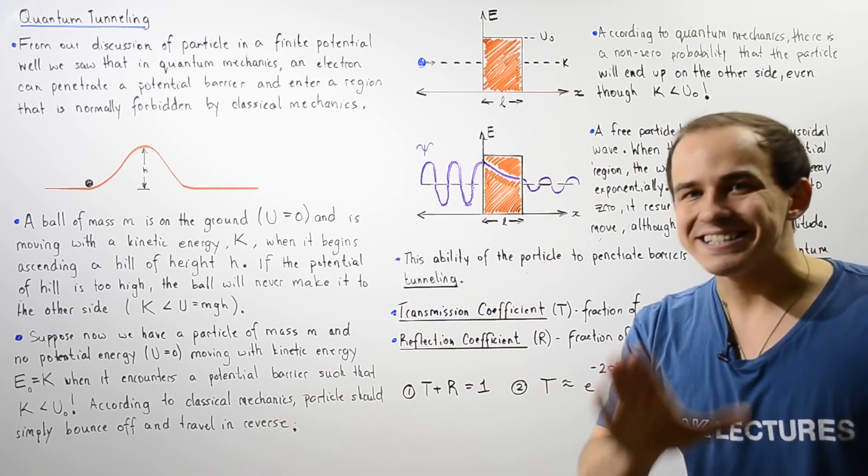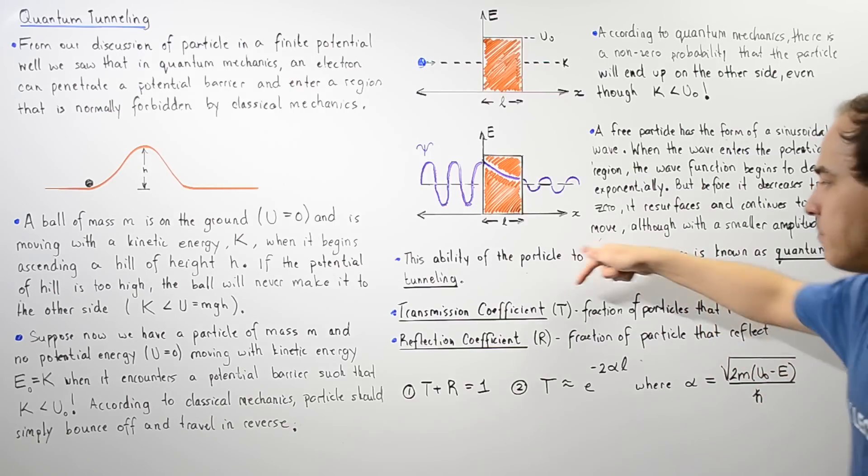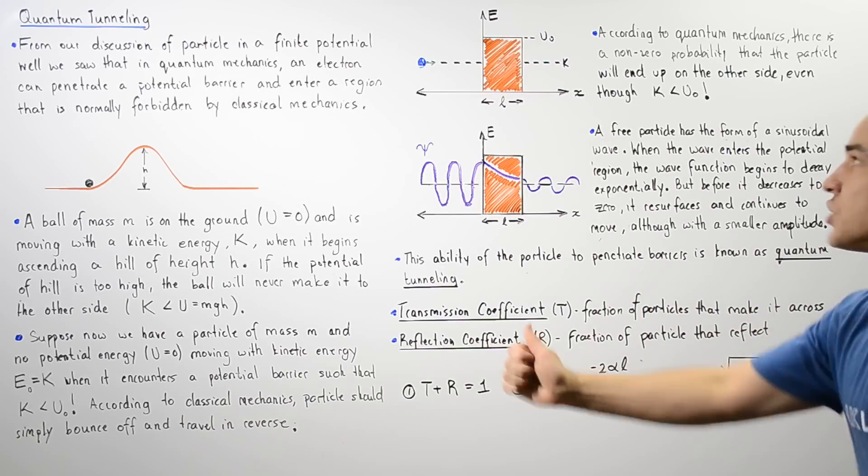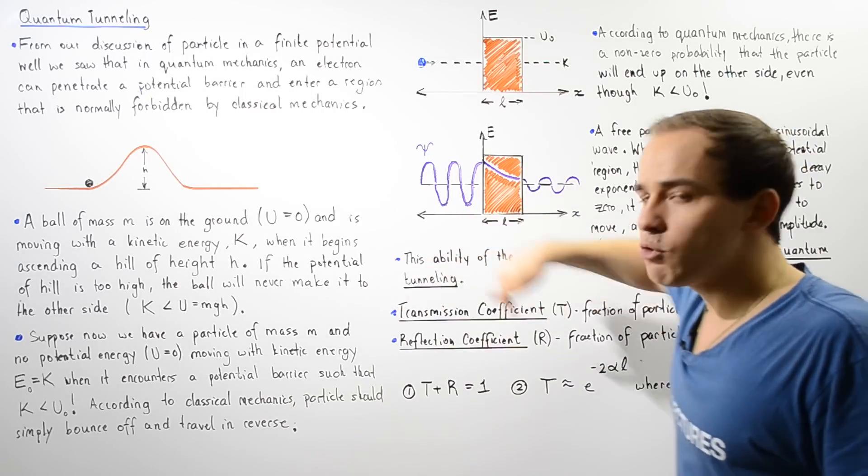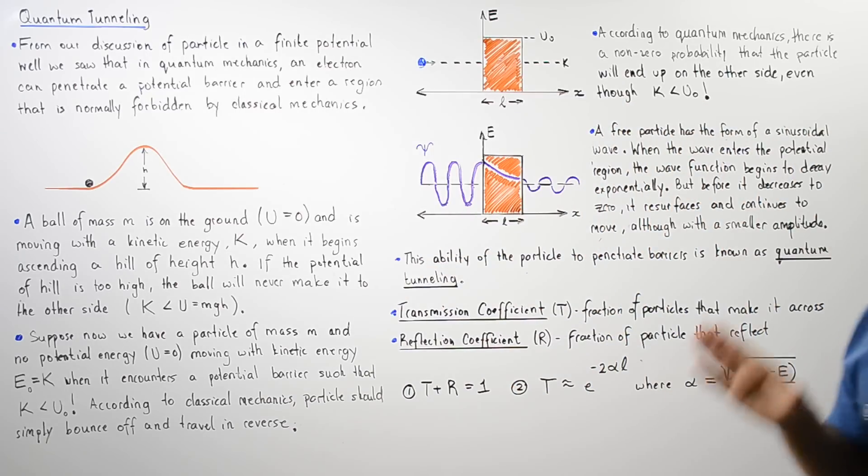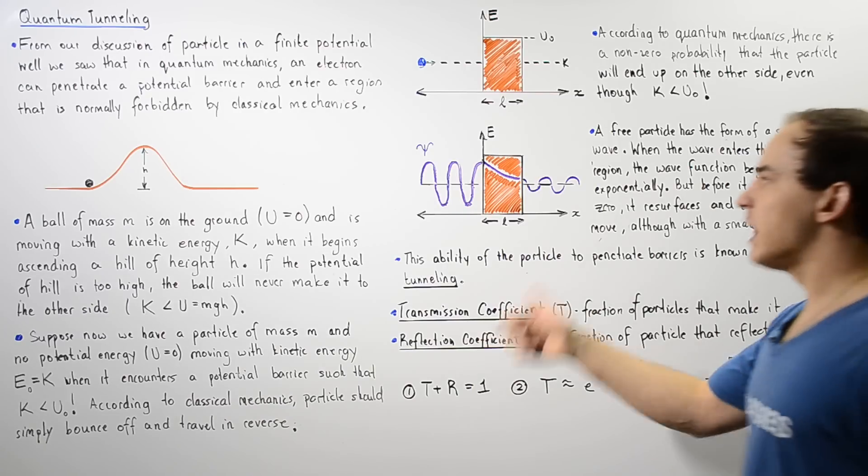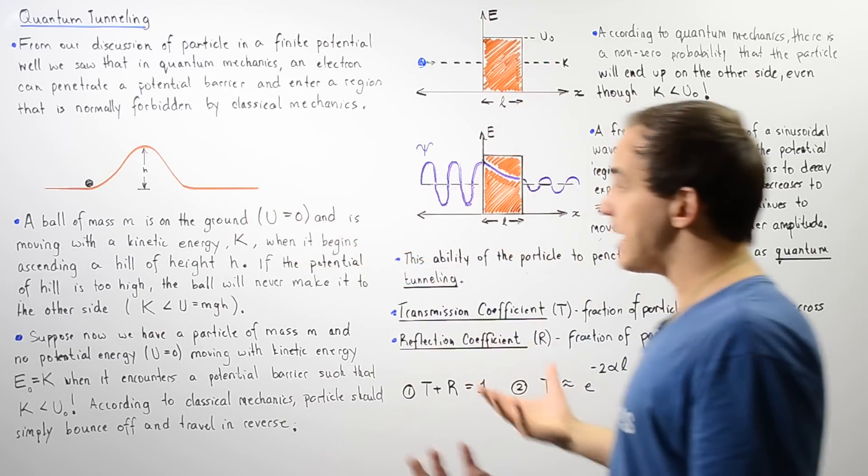And two important terms must be discussed when we discuss quantum tunneling. So we have transmission coefficient given by T, which is basically the fraction of particles that make it across to the other side. And the reflection coefficient given by R, which represents the fraction of particles that reflect and travel back.